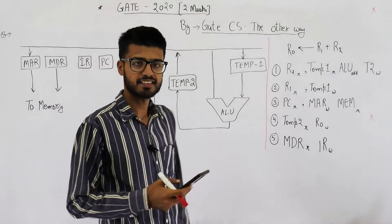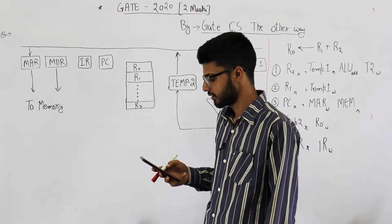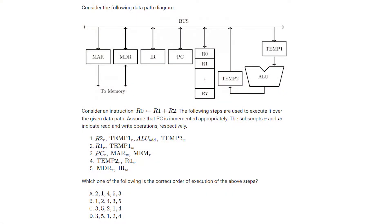Hi learners, let's have a look at this question from the 2020 exam — it's a two-mark question. Consider the following data path diagram and an instruction: R0 is loaded with the sum of R1 plus R2. The following steps are used to execute it over the given data path. Assume that PC is incremented appropriately. The subscripts R and W indicate read and write operations respectively. There are five steps given, and we need to find the correct order of execution.